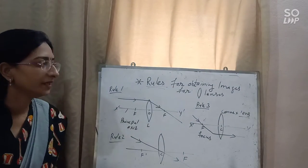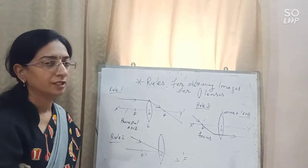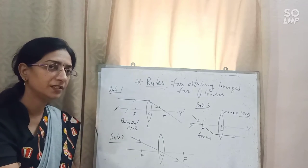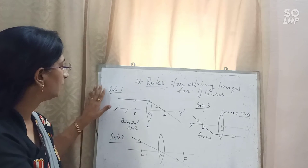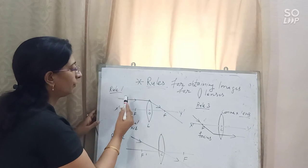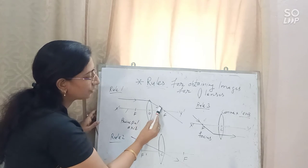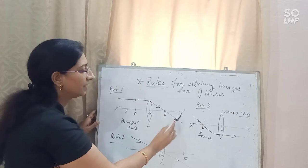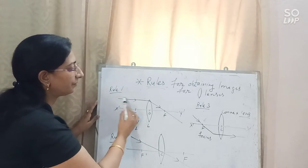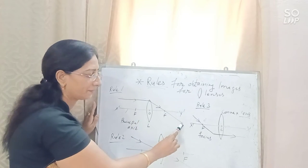The next topic is the rules for obtaining images for convex lenses. When drawing image formation we must follow these rules. Rule one: whenever a ray of light is parallel to the principal axis, after passing through the convex lens it will pass through the focus point.